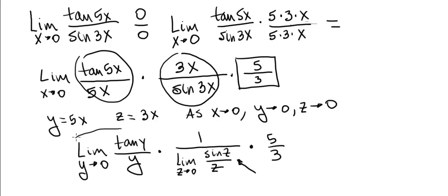Now this limit is 1, you can see why that is in the previous video or you may already know that. Of course this limit here is also 1, so we have 1 times 1 times 5 thirds, and the answer is 5 over 3.